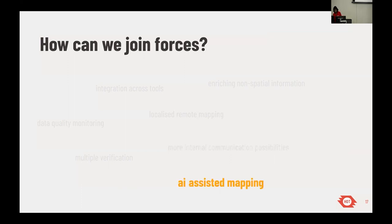The final theme is AI-assisted mapping — not just in the editors like Rapid, which will bring feature detection integration, but also AI integration across different workflows. This could include difficulty estimates for a task so validators better understand what features could be mapped and what kind of mappers could be involved. It could also be about completeness or gap estimates for a specific mapping project. The possibilities with AI-assisted mapping are endless.